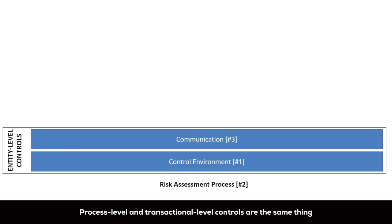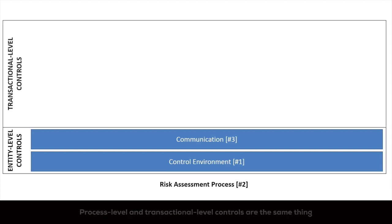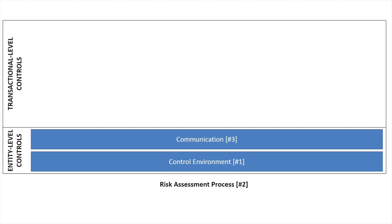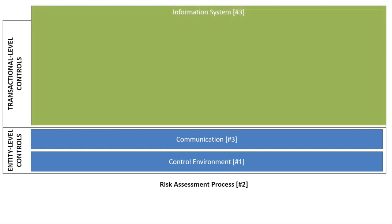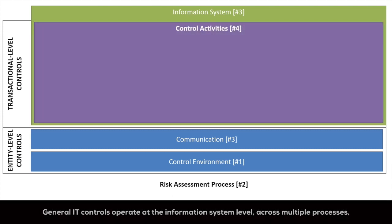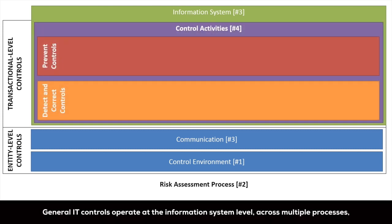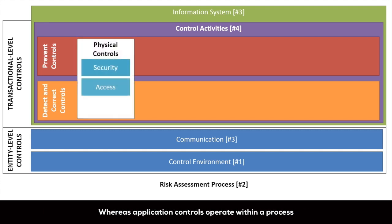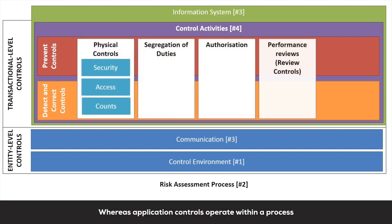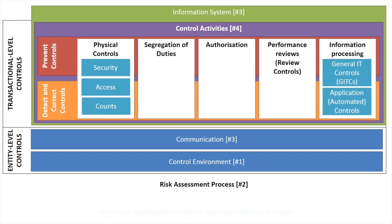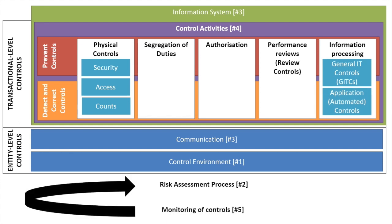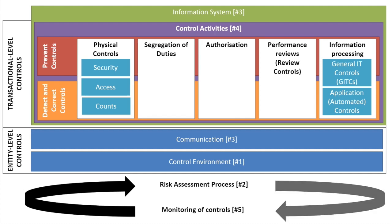Management can also reduce or avoid risk more directly by implementing control activities at the process level where transactions are being processed through the entity's information system. ISA 315 revised groups control activities based on their objective, either to prevent or to detect and correct risks. The standard also looks at control activities in terms of their nature. Once implemented, controls are monitored to make sure they're working and the results are fed back into the risk assessment process, which starts the cycle all over again.